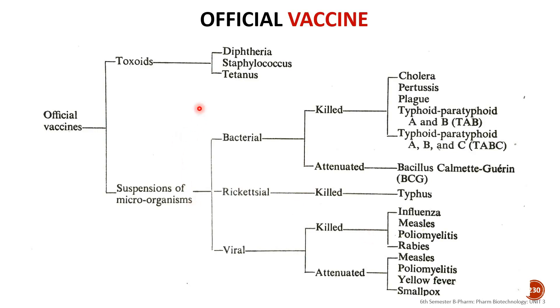We can classify the official vaccines into two categories: toxoids and suspensions of microorganisms.